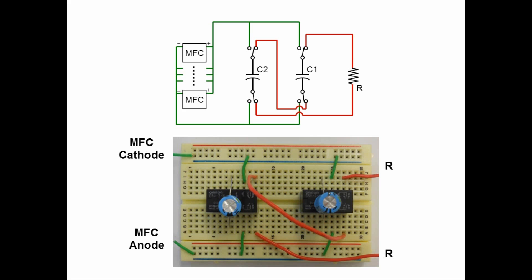In summary, MFCs are always arranged in parallel to avoid voltage reversal problems. And during the charging mode, the capacitors are arranged in parallel. But they are rearranged in series during the discharging mode to boost the discharging voltage.